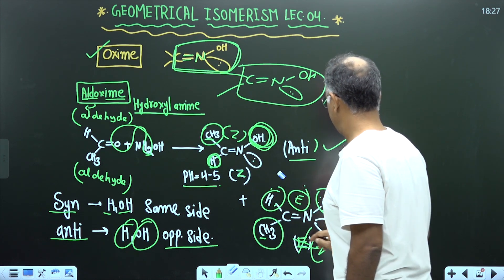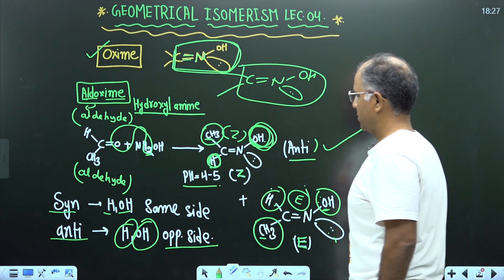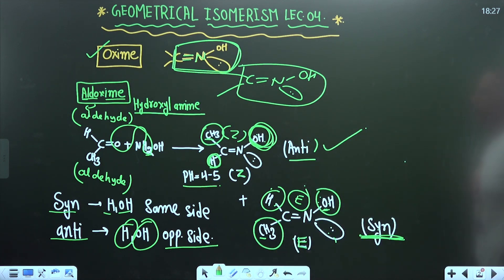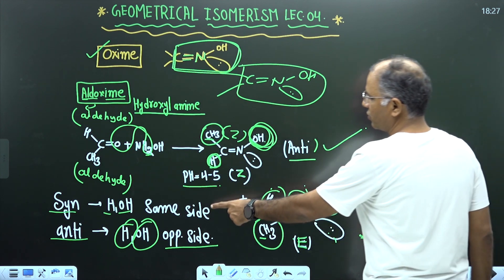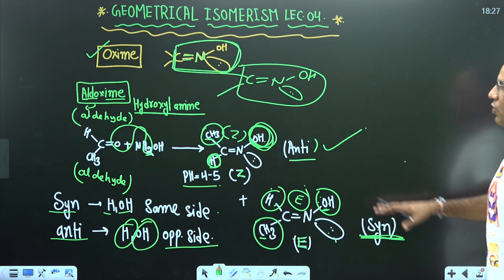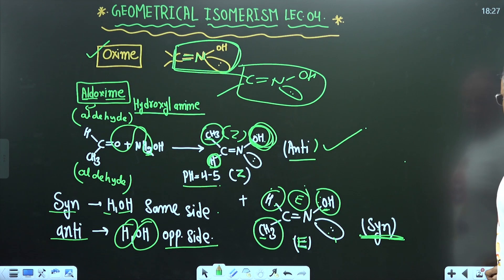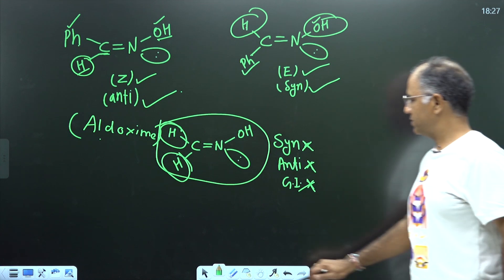To summarize: H and OH on the same side is syn; H and OH on opposite sides is anti — for aldoximes. Pause the video and write these examples.